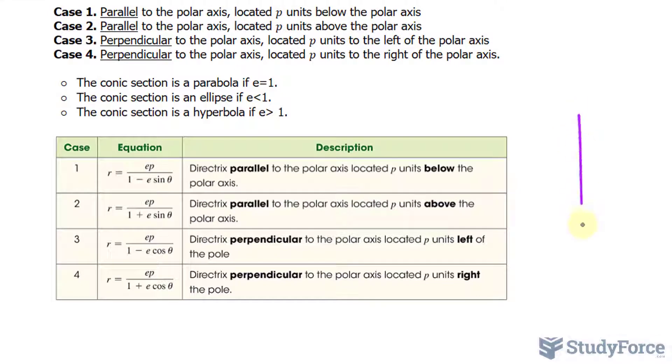So if we had a polar plane that looked like this, the directrix would be somewhere here, and it would be located three units left of the pole.